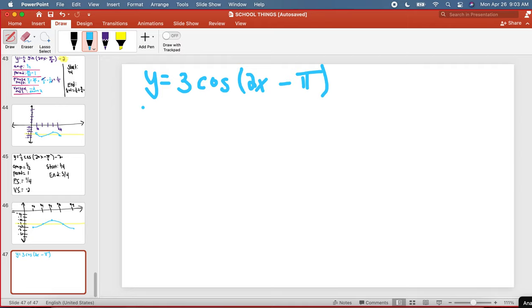A sine or a cosine graph. We know that you got to find your amplitude first, right? So in this case, my amplitude is 3.